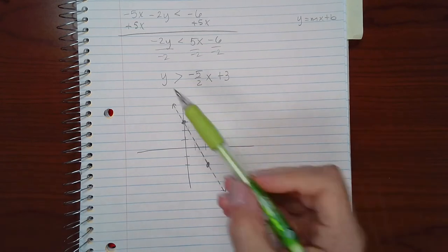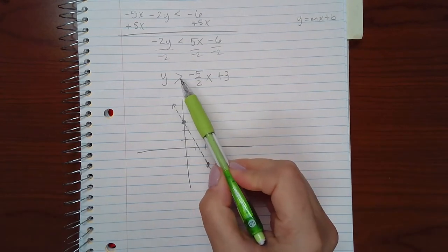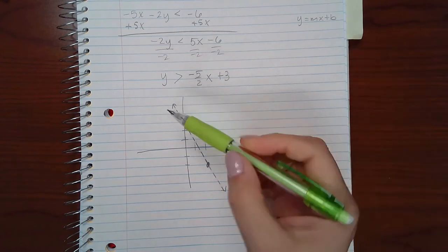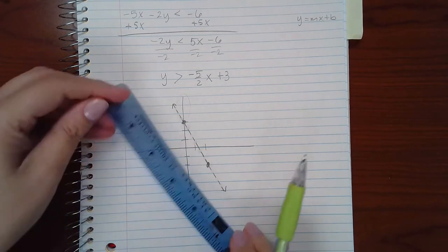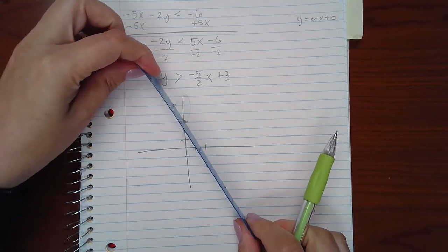Okay, then now I need to shade. Since it tells me y is greater than this line, I am going to shade where the y values are greater. Now you only have two sides of the line.